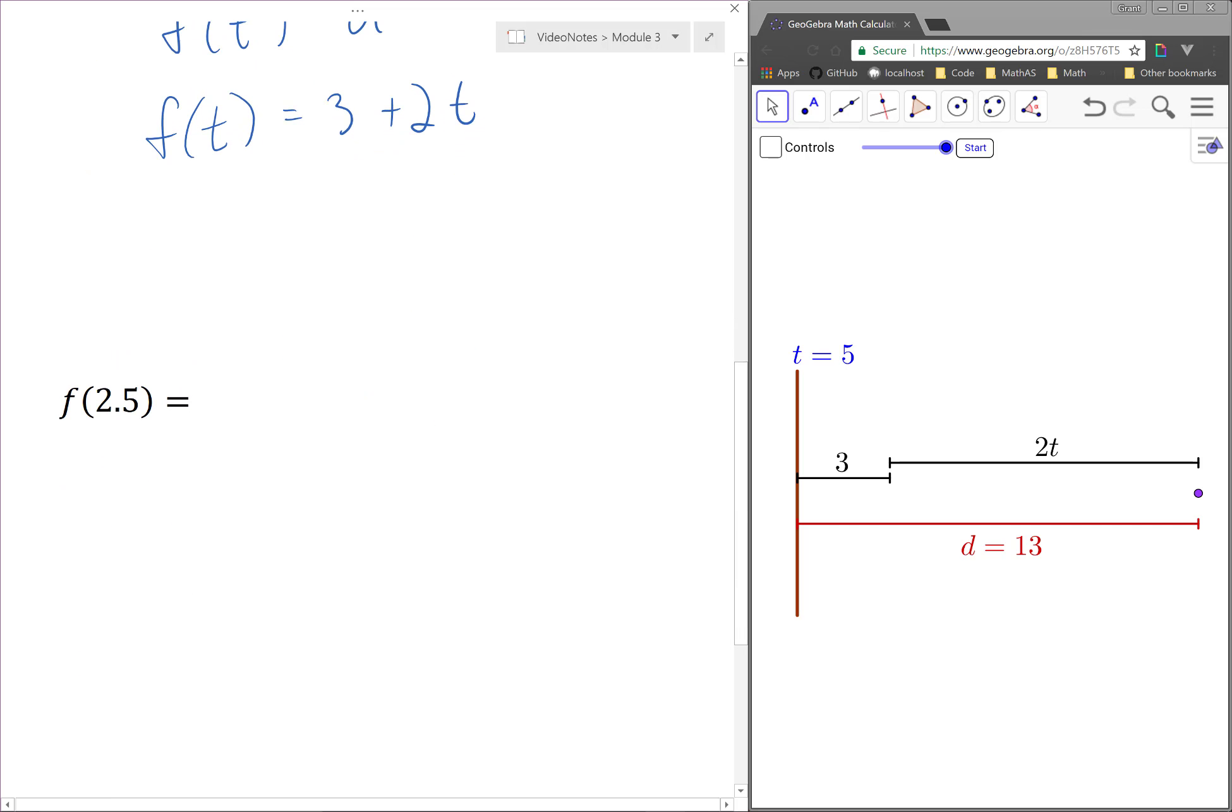f of 2.5 will be equal to 3 plus 2 times 2.5. This is equal to 3 plus 5, which is equal to 8. And this tells us that 2.5 seconds after the particle began moving, the particle is 8 meters from the wall.